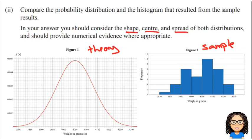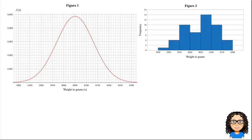In particular, they've said shape, centre, and spread, and give numerical evidence. So those are the three things that we want to look at. Let's start by having a look at our shape.